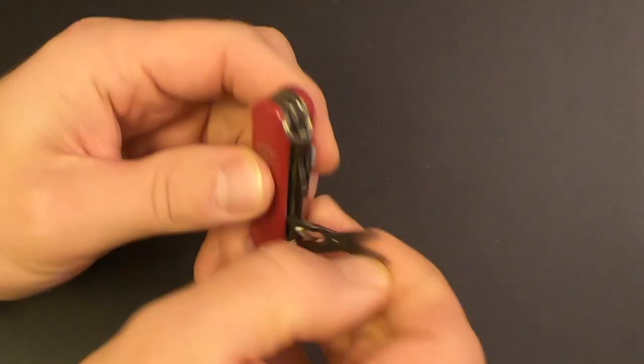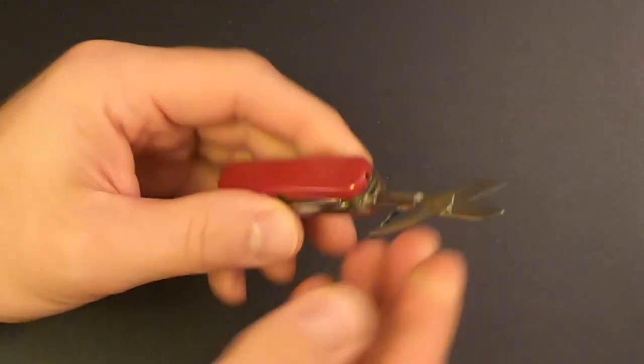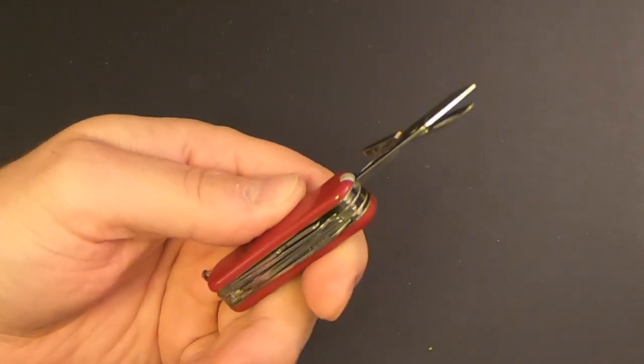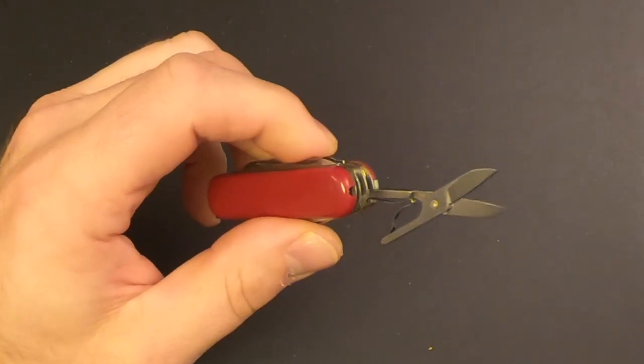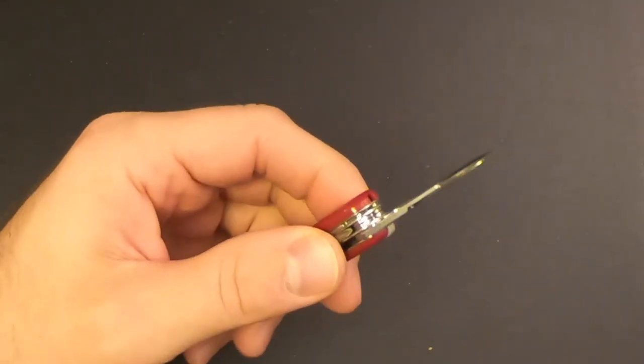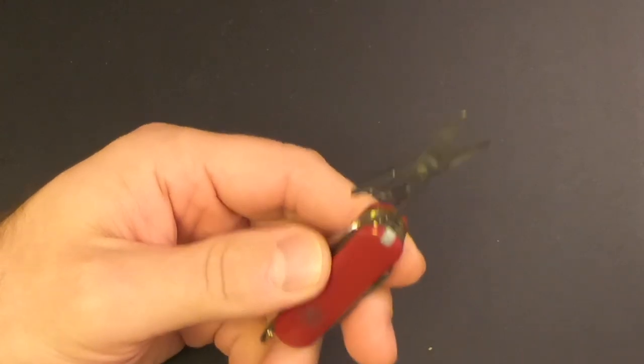It locks in there and you're good to go. I'll show you an example of writing with the ballpoint pen in just a few minutes. Then we've got the scissors. And this is probably the tool I use the most on the Mini Champ.